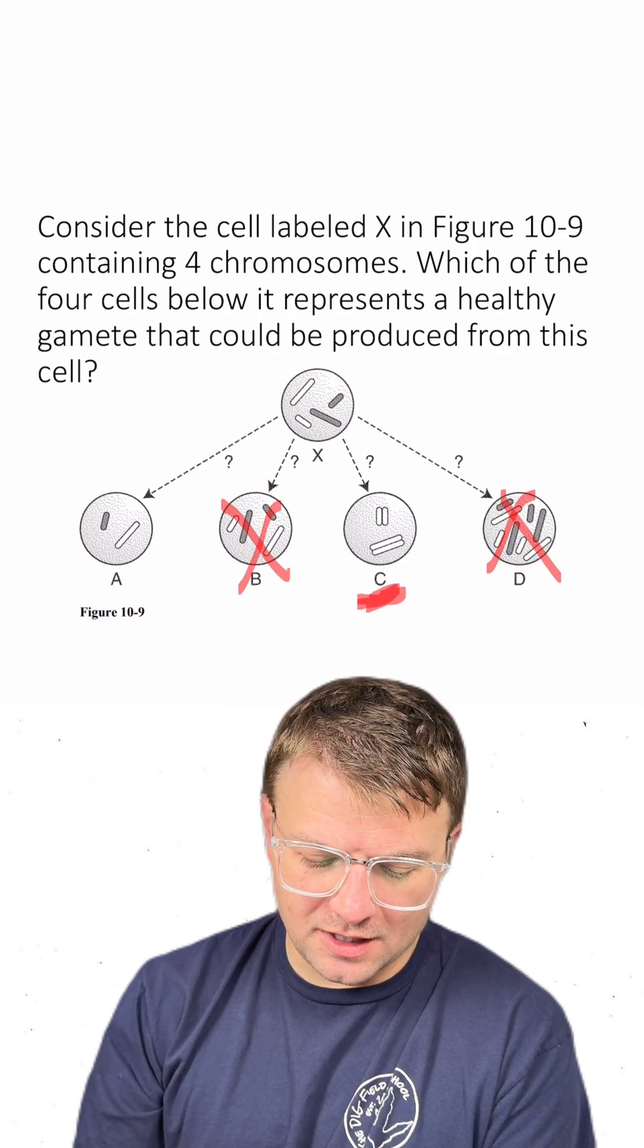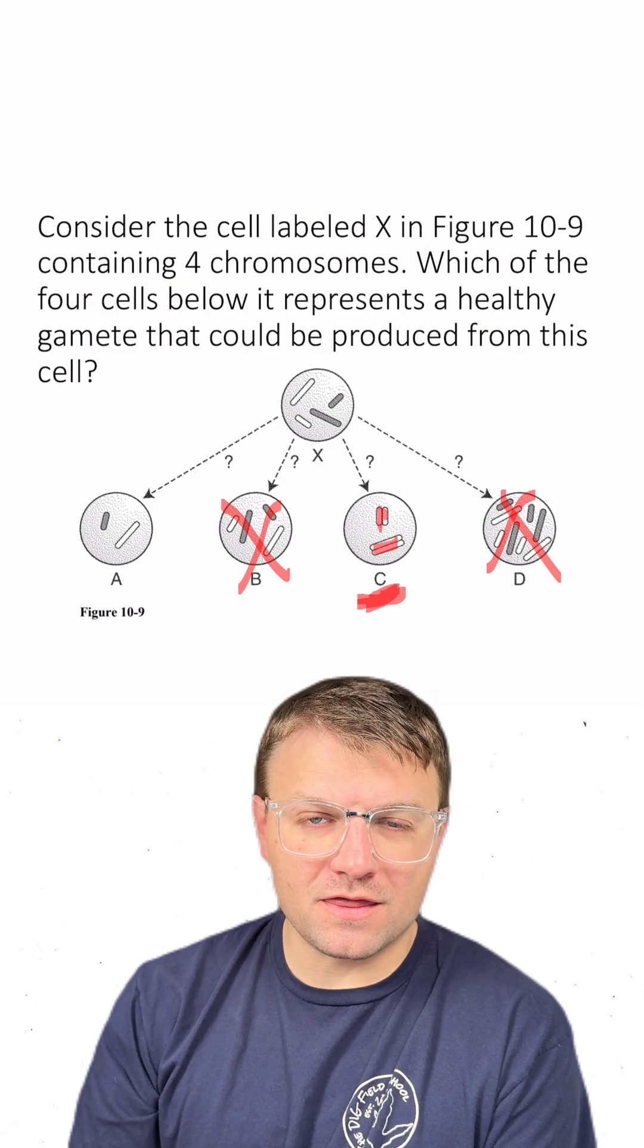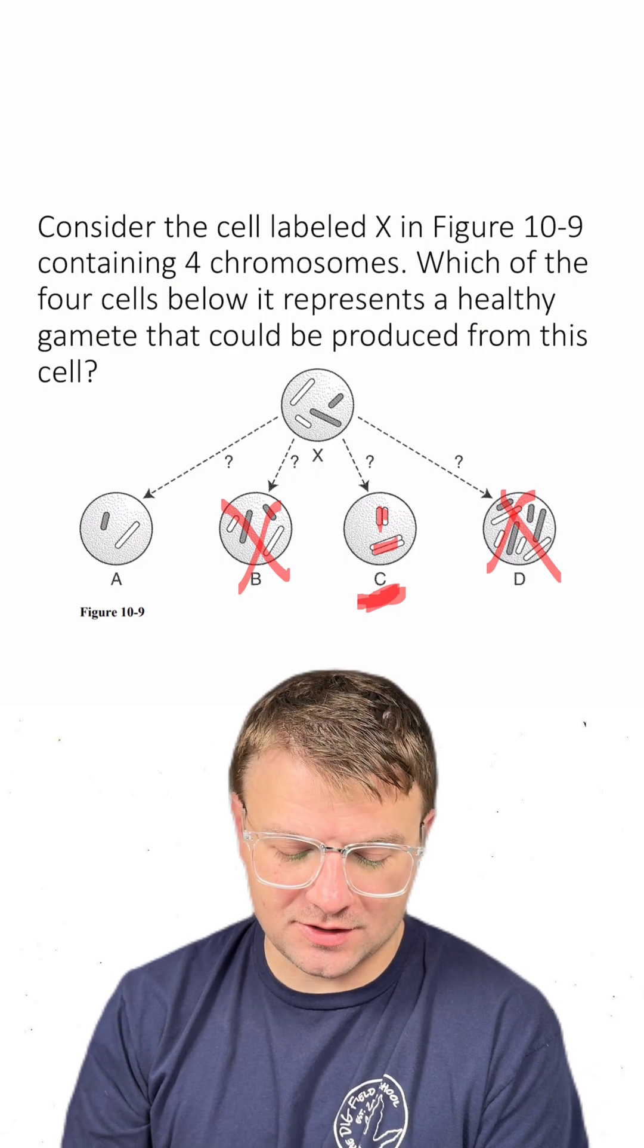The cell for C has one of each of these chromosomes. However, they're still duplicated. They still have sister chromatids.